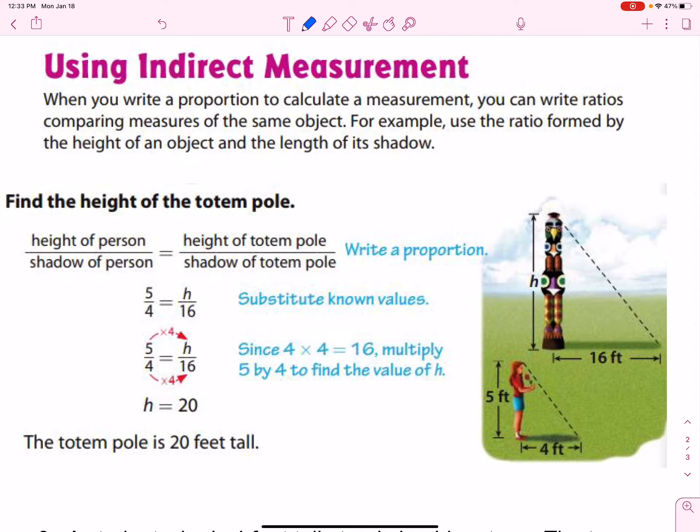In this image we see that there is a girl and she knows her height. She's five feet and her shadow measures four feet.